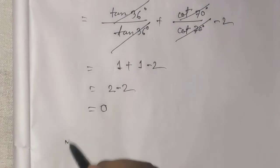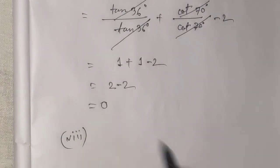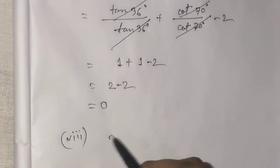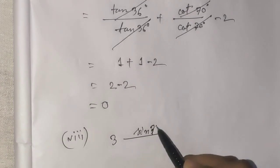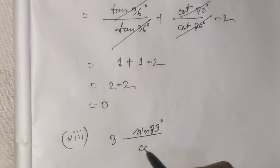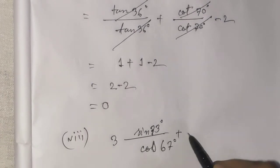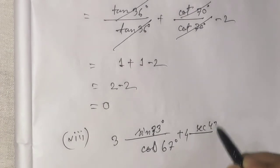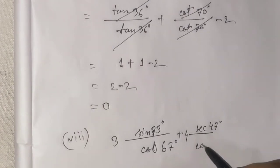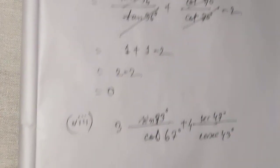The answer is zero. Next example: 3sin23°cos67° plus 4sec47°cosec43°.